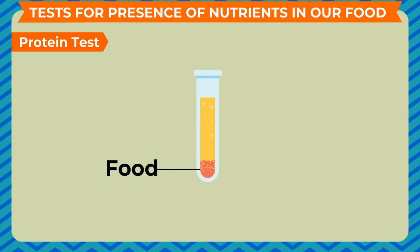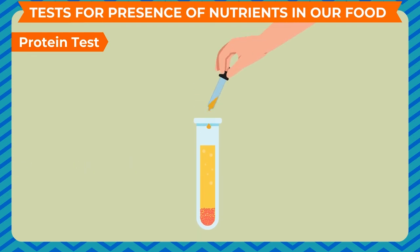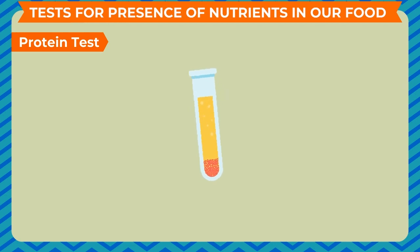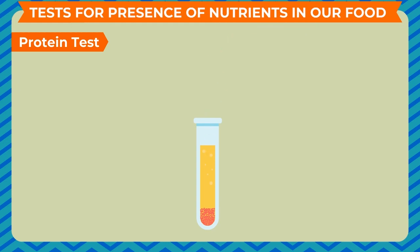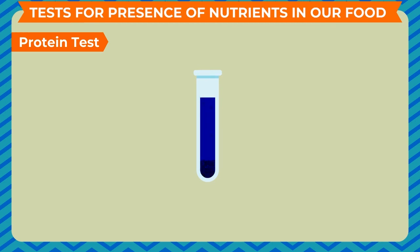Protein test: take a small quantity of the food item in a test tube. If the food item is solid, it must be mashed or powdered before putting it in the test tube. Add about 10 to 12 drops of water to the food item in the test tube and shake gently. Add two drops of copper sulfate solution and stir with a glass rod. Add another 10 drops of caustic soda solution. Stir again and rest the test tube for four to five minutes. If the blue color in the test tube turns violet, the presence of protein in the food is confirmed.